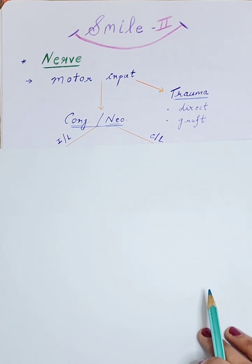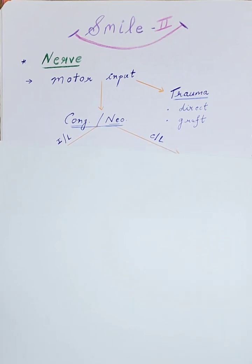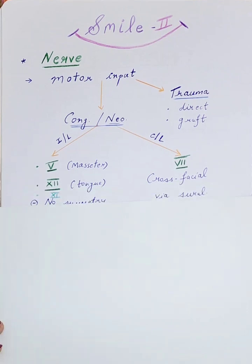In those cases, we first have to see whether we have motor input on the ipsilateral side — that is, the affected side with the facial palsy — or whether we need to take help from the opposite, normal side. For ipsilateral options, we can go in for the nerve to the masseter, which comes from the trigeminal nerve, or the hypoglossal nerve, which innervates the tongue musculature. In certain cases, the spinal accessory nerve has also been tried.